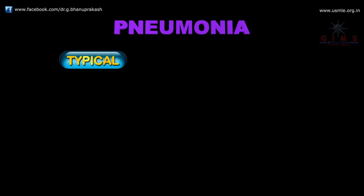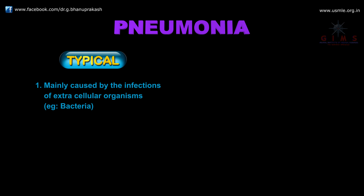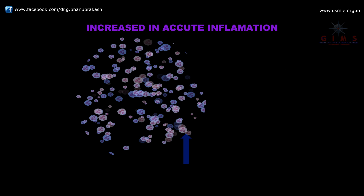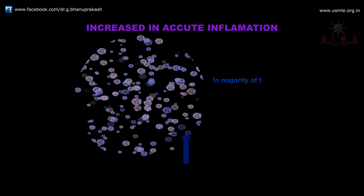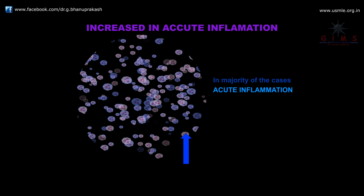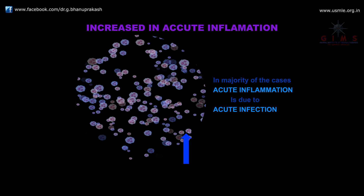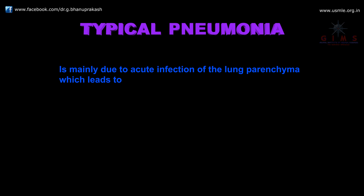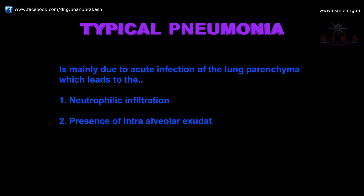Typical pneumonia is mainly caused by extracellular organisms, mainly bacteria, and is characterized by neutrophilic infiltration. Neutrophilic infiltration is always due to acute inflammation, and in most cases, the acute inflammation is due to acute infection because pneumonia is mainly caused by bacteria. This leads to neutrophilic infiltration and intra-alveolar exudates, resulting in lung consolidation.